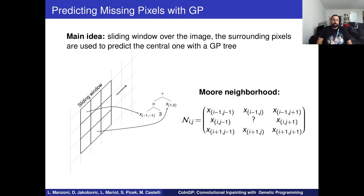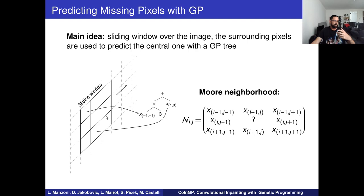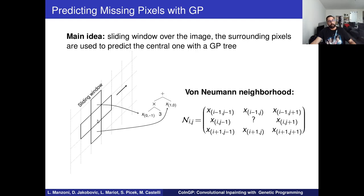The basic idea comes from convolutional neural networks: we slide a small window over the image, and at each position we use the surrounding pixels as input to a GP tree. The output is the GP tree's prediction for the central pixel, which we assume to be missing. We experimented with two neighborhood topologies: the classic Moore neighborhood, a 3×3 square where each pixel exploits information from north, south, west, east, and diagonal pixels; and the von Neumann neighborhood, which uses only the north, south, west, and east pixels.